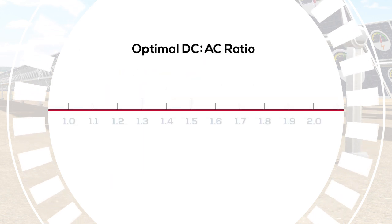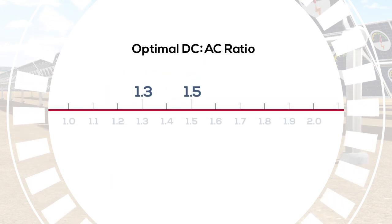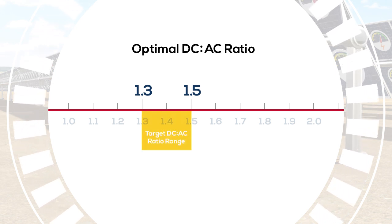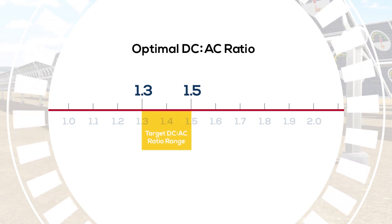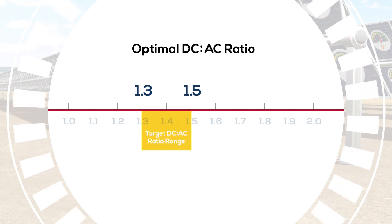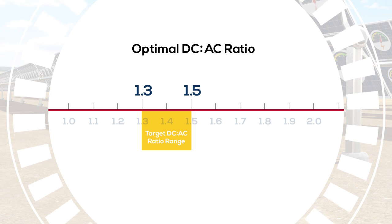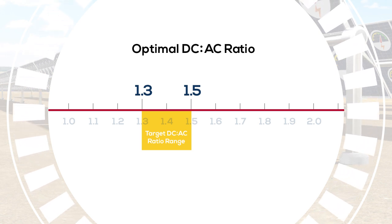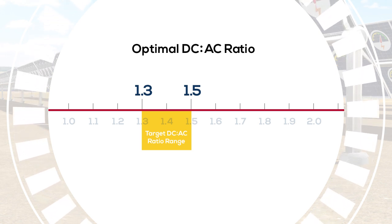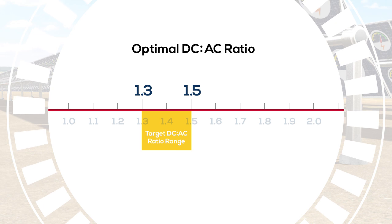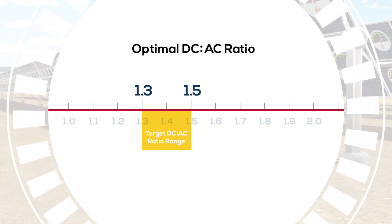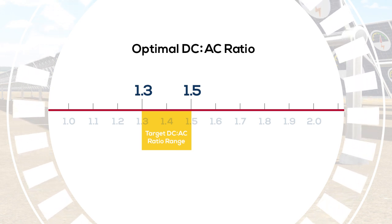Generally, you want a DC to AC ratio of at least 1.3, sometimes as high as 1.5, to maximize production and minimize the levelized cost of electricity for your project. But some inverters won't allow you to get into that target DC to AC ratio range.